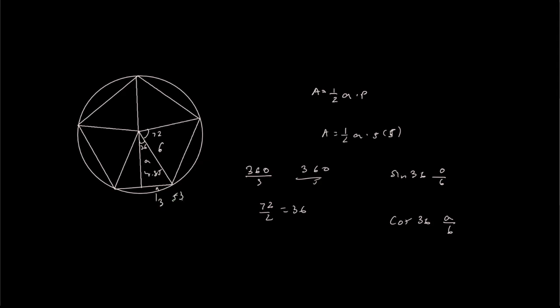Now that we have the apothem, let's solve for the perimeter. Since this is half of one side, we multiply that by 2. So 3.53 times 2, and we get a value of 7.06 per side.